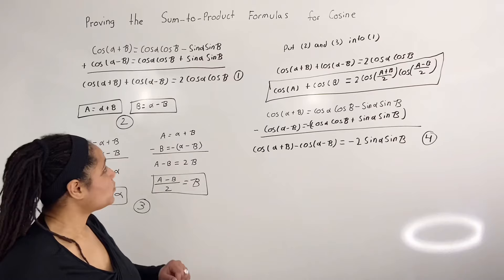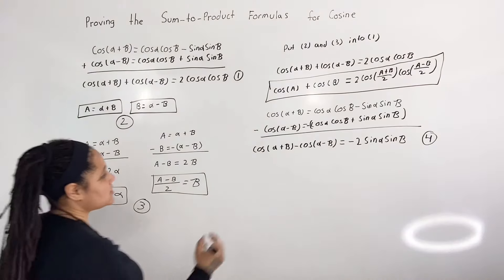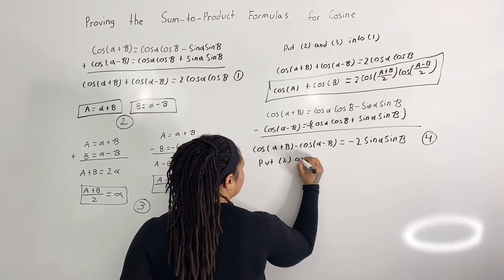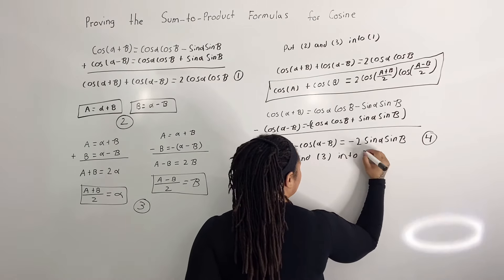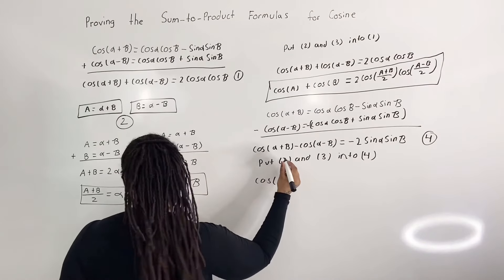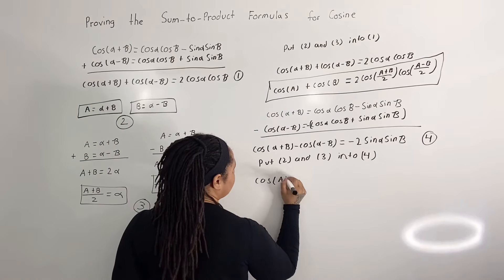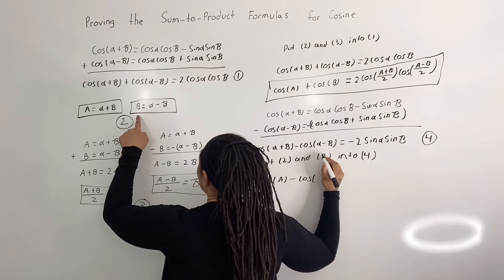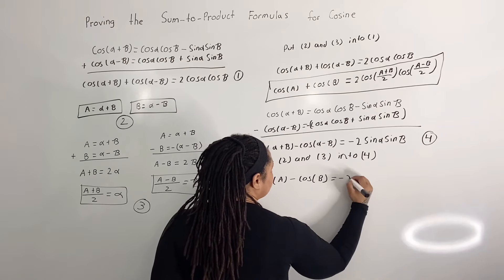So what we're going to do is put equations 2 and 3 into 4. We have cosine of alpha plus beta is equal to a, so cosine of a, minus cosine of alpha minus beta is equal to b, so we have cosine of b is equal to negative 2 sine of...